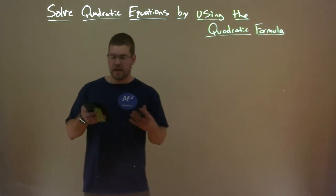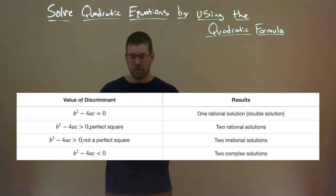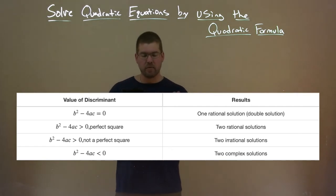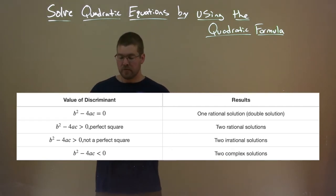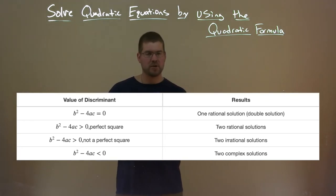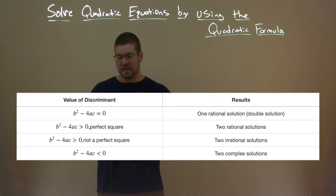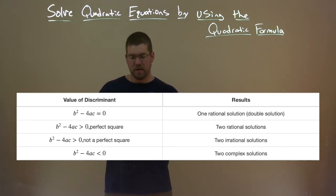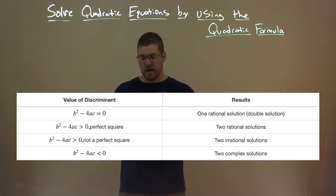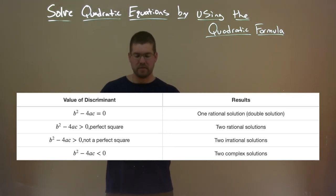We can look at this table. If b squared minus 4ac equals zero, we get one rational double solution. If b squared minus 4ac is greater than zero and a perfect square, we have two rational solutions. If b squared minus 4ac is greater than zero but not a perfect square, we also have two rational solutions. And if b squared minus 4ac is less than zero, we have two complex solutions.